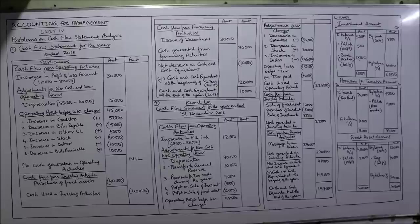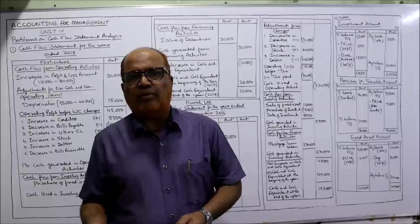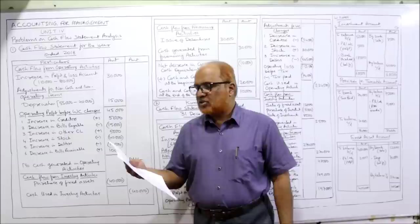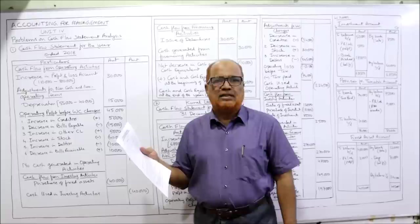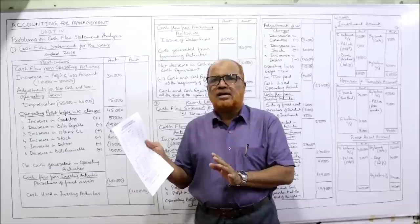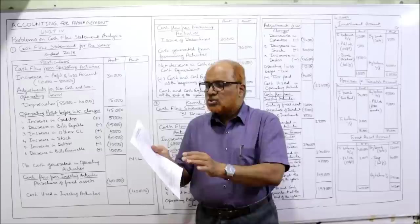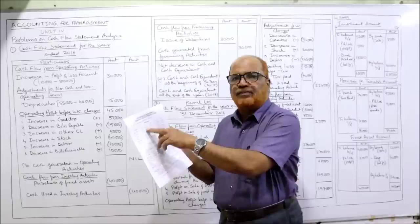See the first problem: from the following details, prepare a cash flow statement. Two balance sheets are given — 2017 and 2018. No adjustments are given, only balance sheets of two years. We have to make the cash flow statement for the current year 2018; the last year is 2017. Two balance sheets are given side by side with liabilities and assets. Share capital: last year 50,000, current year 50,000 — no change.